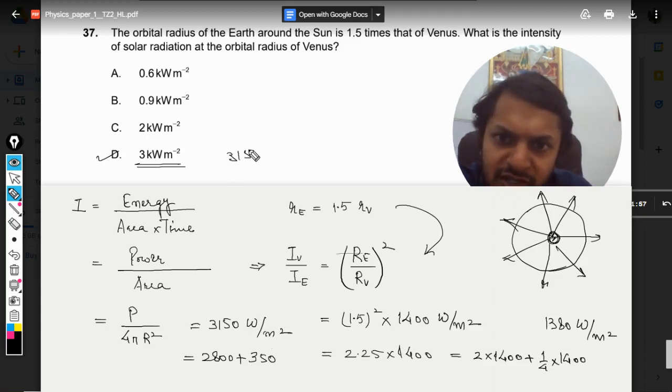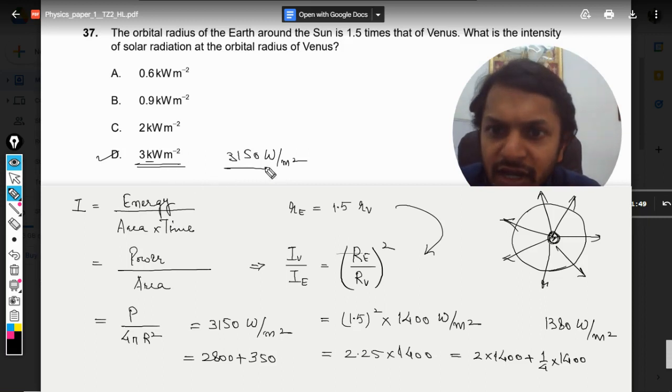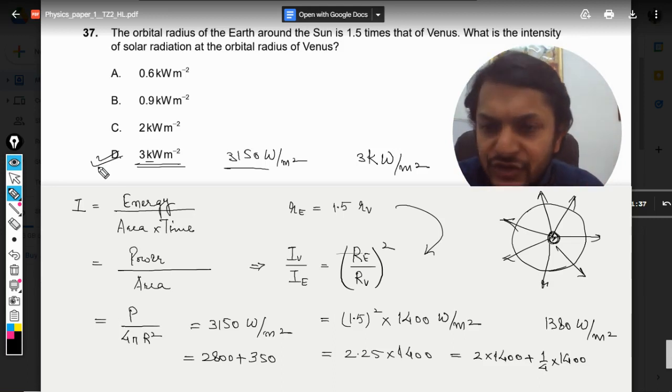So 3150 watt per meter squared. When we convert into kilowatts, it will become 3 kW per meter squared. Our answer will be D. This is the explanation for this question.